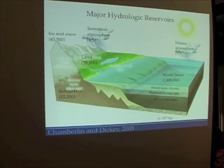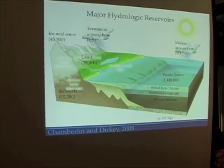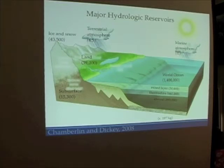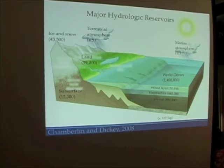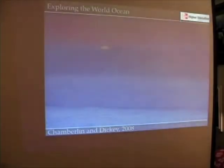The world ocean is the largest reservoir. Land sources — lakes, including the Great Lakes and many of the world's other lakes — are the second largest reservoir. Ice and snow is third, groundwater fourth, and the atmosphere is the smallest reservoir for water. But even though the atmosphere is the smallest reservoir, those clouds produced as part of the atmosphere are very important. Size isn't always a good indicator of how important a reservoir is.